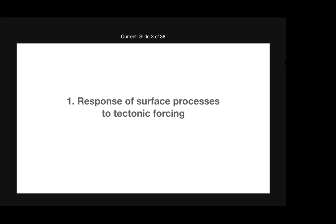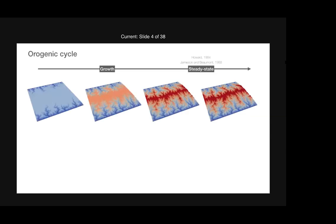Let's start by looking at the response of surface processes and potential feedback to tectonic forces. I'll think of mountain building as a cycle — this has been in geomorphology research for many years, expressed by Howard in 1984. From the tectonics point of view, people also realized there may be a link with surface processes: you can get to a steady state between uplift, tectonics, and erosion, as shown by Jameson and Beaumont in 1998.